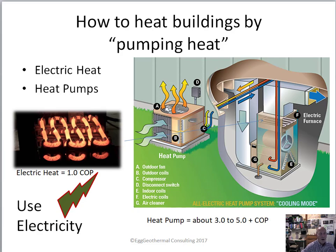Buildings are heated with heat pumps by the pumping of heat. This image shows a building that's acting kind of like a refrigerator. Think of a refrigerator sitting in your kitchen and it's trying to cool this building. In order to cool it, you see the blue arrow here — it needs to remove heat from the building. So on this air source heat pump example, it's pumping heat from out of the building to the outside. This is an electric air conditioner, which is essentially a heat pump. They use electricity and they use about one unit of energy to pump about three units of heat.